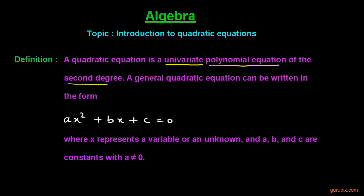The variable will be one in a quadratic equation, and the quadratic equation is formed by a polynomial of second degree. The general form of a quadratic equation can be written as ax² + bx + c. The degree of this equation is two because two is the highest power of the variable x. a, b, c are constants and are real numbers.